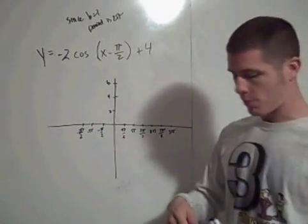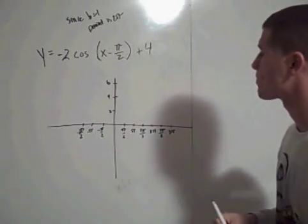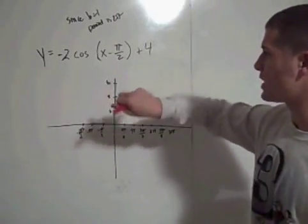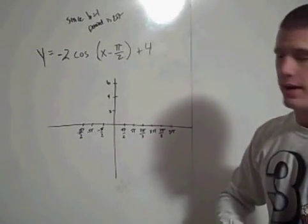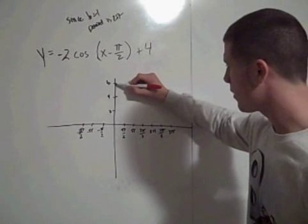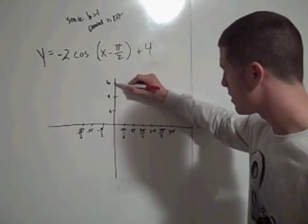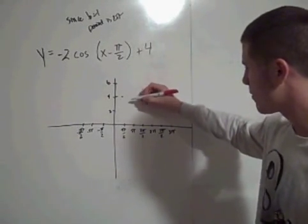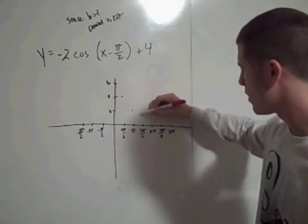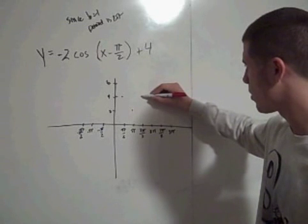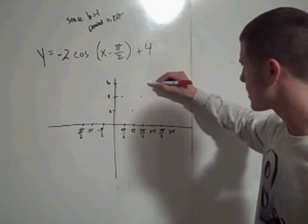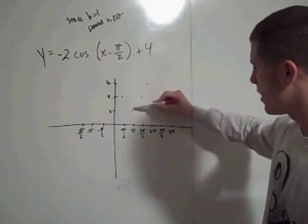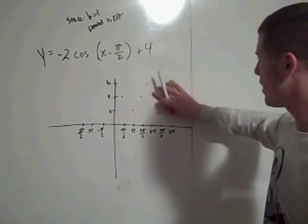So, I'll plot the points in red, where our function would be initially if there was no reflection and no horizontal shift of pi halves. Well, it would start up here at 6. Then at pi halves, it would be at 4. At pi, it would be at 2. At 3 pi halves, it would be back at 4. And at 2 pi, it would be back at 6. And that would be one full cycle. The full cycle would come up from here, go down, and then come back up, and then go back down. In that fashion.